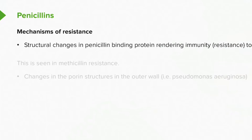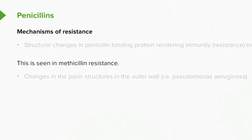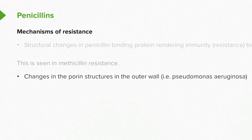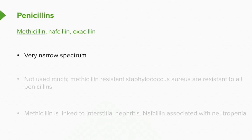There are other mechanisms of resistance bacteria have against penicillin. Sometimes there's a structural change in the penicillin-binding protein, which renders resistance to penicillins — this is actually the mechanism of methicillin resistance, which has become a real problem in our hospitals. Sometimes there's a change in the porin structure of the outer wall; for example, the resistance of Pseudomonas to penicillins, where the penicillin isn't able to penetrate because of the altered porin.